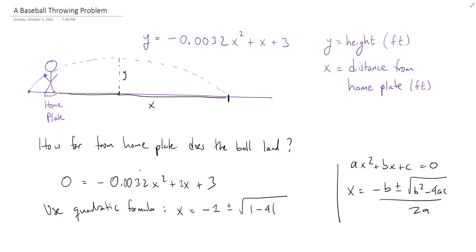All right. Our a, that's our leading coefficient. So that's negative 0.0032. And then our c, well, that's the constant term. That's a 3.